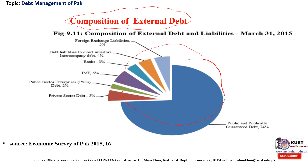Regarding the composition of external debt, this pie chart diagram explains that at end-March 2015, external debt and liabilities (EDL) was dominated by public and publicly guaranteed debt, having a share of around 74 percent. The remaining proportion consists of private sector debt, public sector enterprises, IMF, and banks.